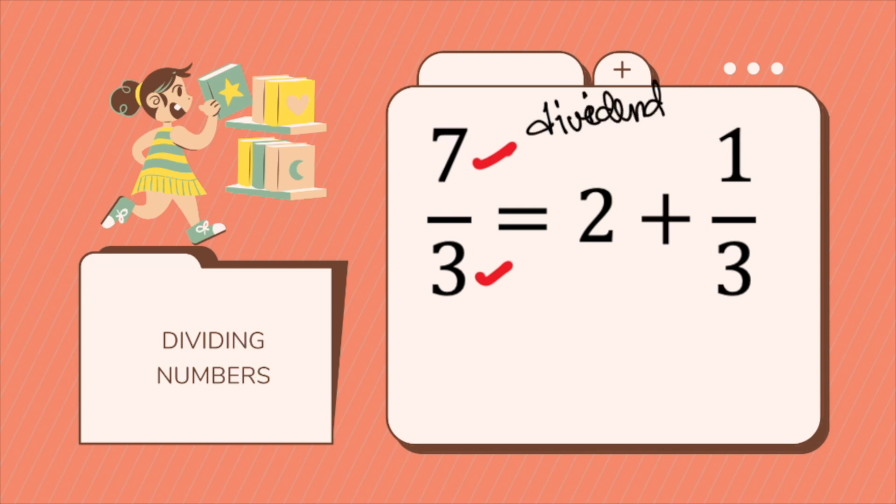And our 3 is what we call our divisor. The answer, the whole number that we get when we divide 7 by 3, is what we call a quotient. And this, which is our remainder.